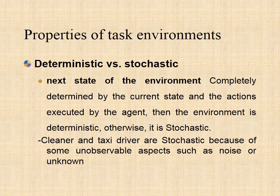If an agent's current state and selected action can completely determine the next state of the environment, then such an environment is called a deterministic environment. A stochastic environment is random in nature and cannot be determined completely by an agent. In a deterministic, fully observable environment, an agent does not need to worry about uncertainty. For example, a crossword puzzle or a water jug problem is deterministic because the result of all actions is defined within the environment. But for a taxi driver it is stochastic — we cannot say what happens on the way.